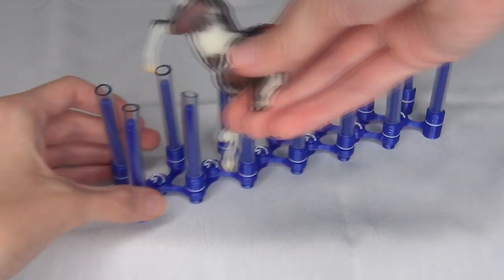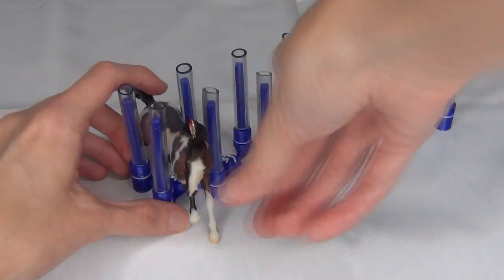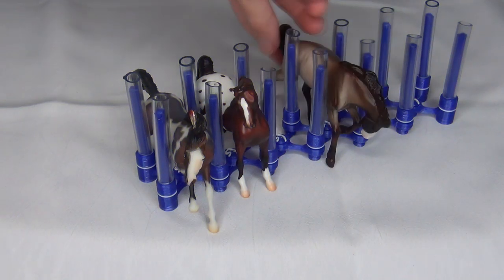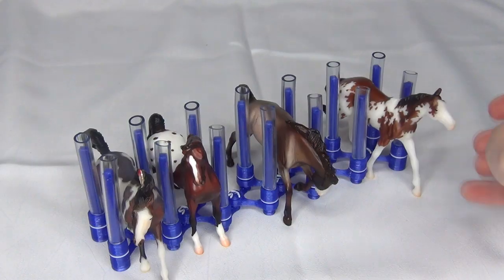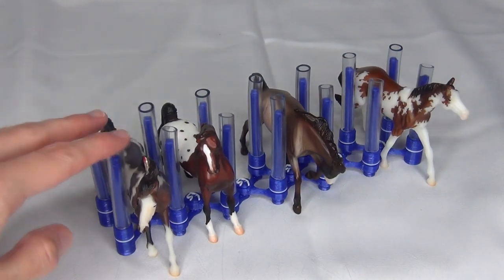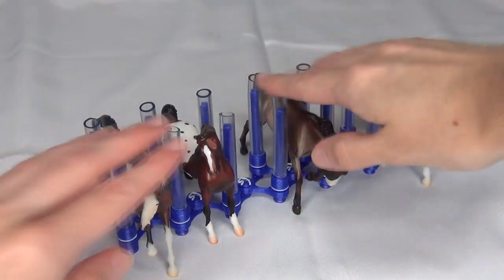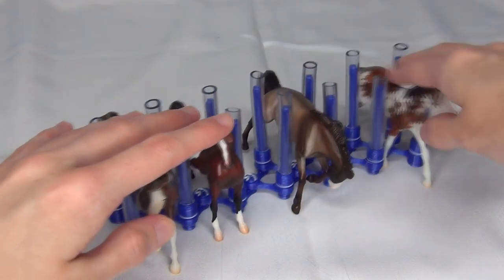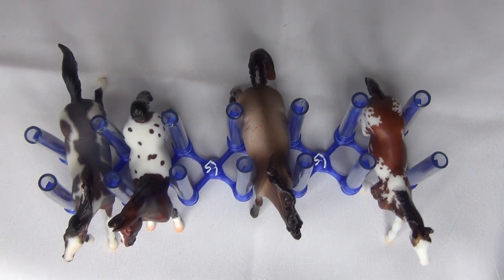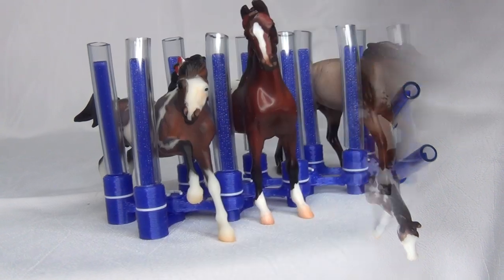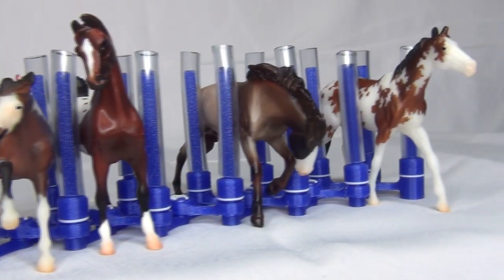Should actually put some stablemates in there. So there's some stablemates in there and as you can see these guys aren't going to go anywhere. You can shake them about and they're not going to bang into each other or fall over. They look all cute and snug in their little horse rack.